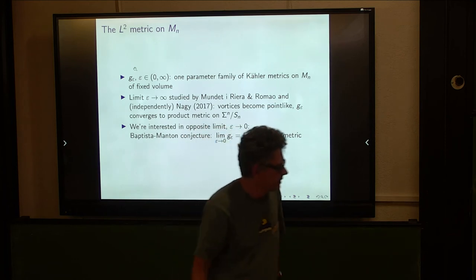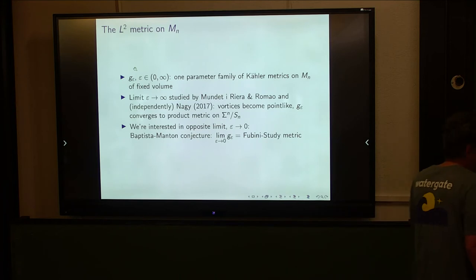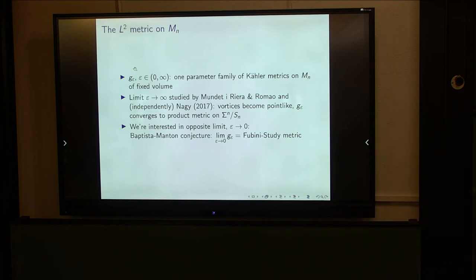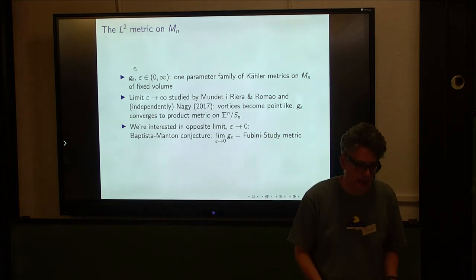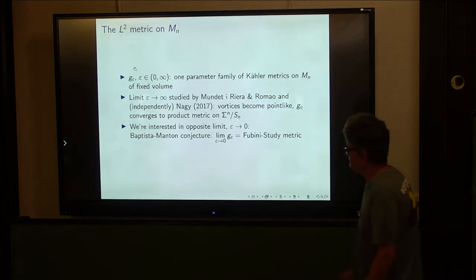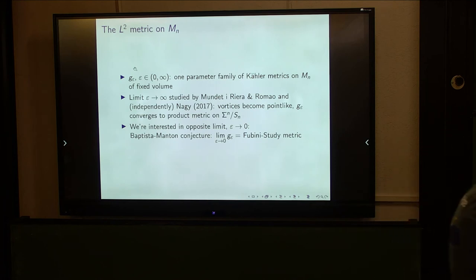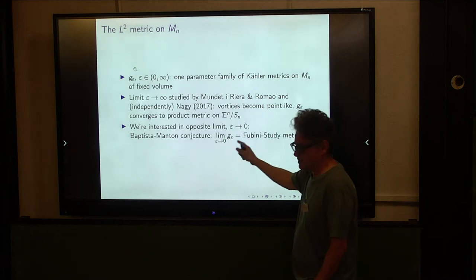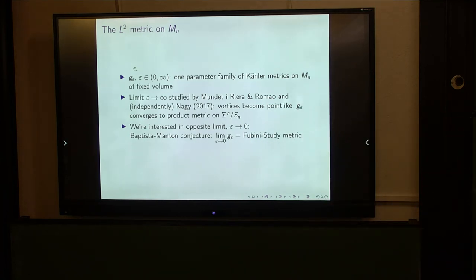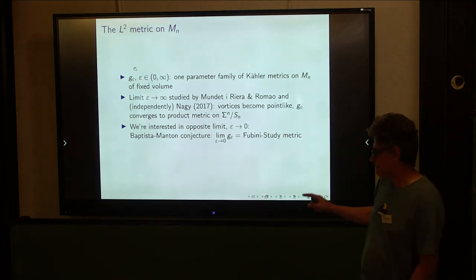In the dissolving limit, approaching the Bradlow limit, the vortices spread out and completely lose their individuality. At the limit, phi equals zero and the connection has constant curvature — you get this completely dissolved, delocalized configuration. This limit is interesting because of a precise conjecture by Baptista and Mantel from 2003 about what happens to the L2 metric: they conjectured that the L2 metric in this limit converges (in a sense they never made precise) to the Fubini-Study metric on CP^N. That is the result which René and I have proved.